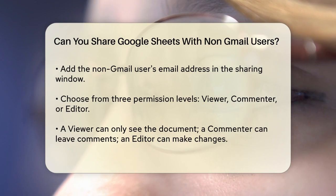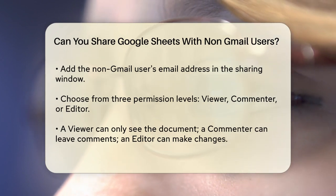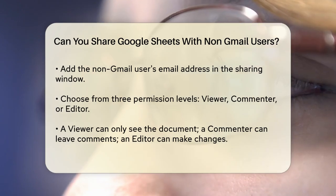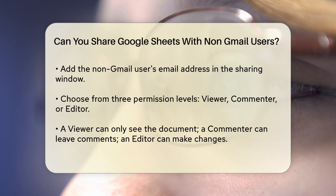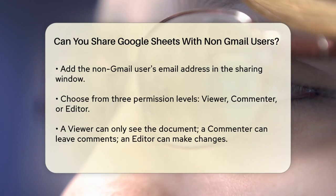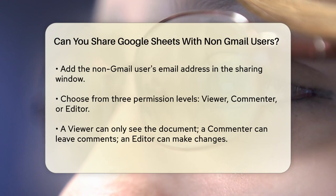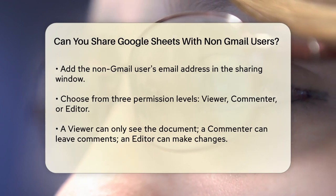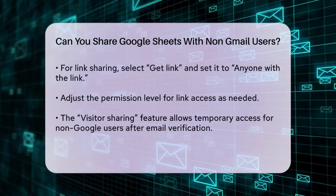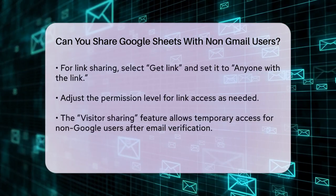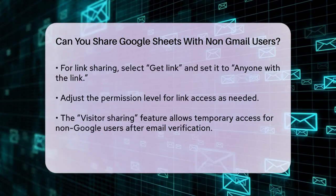If you prefer to share via a link, you can click on the Get Link section in the pop-up window. Here, you can set the link to Anyone with the link and choose the permission level. This way, anyone with the link can access the document without needing a Google account. For example, if you select Anyone with the link and set the permission to Viewer, anyone who gets the link can view the document but cannot edit or share it. You can copy this link and share it via email or any other method.